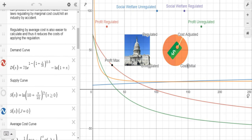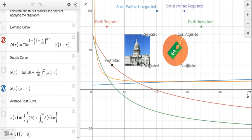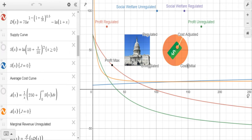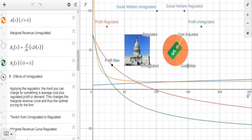So we have our demand curve in red, we have our supply curve in blue, we have our average cost curve in orange, and we have our marginal revenue curve in green. As we can see, we have the market normally as it is unregulated.